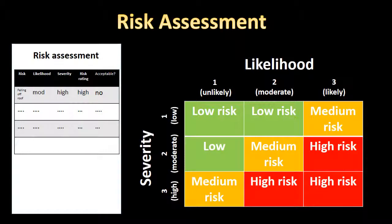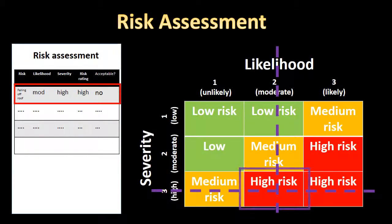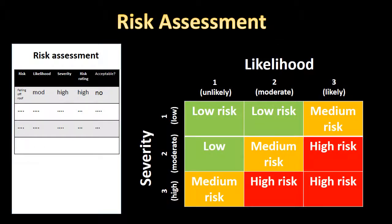You can conduct a basic workplace risk assessment by identifying all possible risks and assigning them with severity and likelihood ratings. Risks with higher ratings require more immediate action than those with lower ratings. The risk rating will then dictate how you deal with the risk. Tasks with unreasonably high risk ratings are not to be performed until the controls have been put in place, which would lower the risk to a more manageable category.